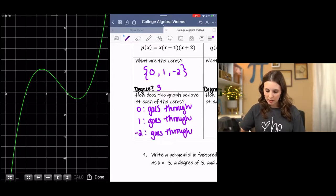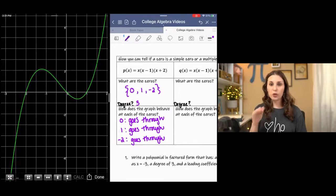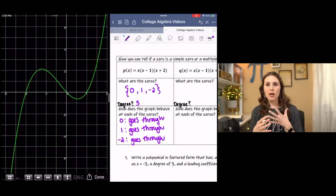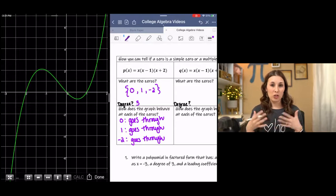And what I'm hoping to do is note what's happening at each x-intercept or each zero. So at zero, the graph goes through zero. So I'm just going to write that down, goes through. At one, it also goes through. And at negative two, it also goes through.